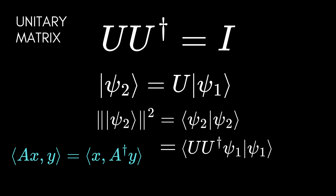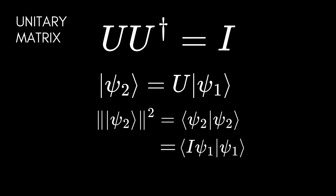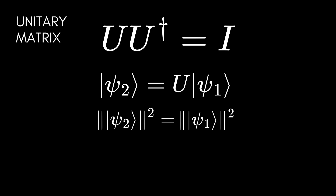We conclude that the inner product of psi-2 with itself is actually equal to psi-1 transposed through U*U-dagger and psi-1. But because U is a unitary matrix, U*U-dagger equals the identity matrix. So we have the identity matrix applied to psi-1, inner product with psi-1. The identity matrix on any vector is the same vector, so the result is the inner product of psi-1 with itself — thus the unitary matrix preserves the norm of the vector.